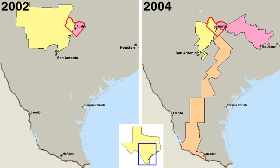There have been five United States presidential elections in which the winner lost the popular vote. Scholars from Alexis de Tocqueville to the present have found a strong continuity in core American political values since the time of the American Revolution in the late 18th century.